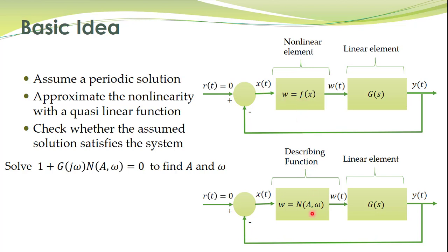We approximate the non-linear function by a quasi-linear function, which we call the describing function. It is different from a transfer function because it depends upon the amplitude and the frequency of the input signal, whereas transfer functions only depend upon the properties of the system. In the second step we approximate the non-linearity with a describing function and then check whether our assumed solution satisfies the differential equation which describes this system.